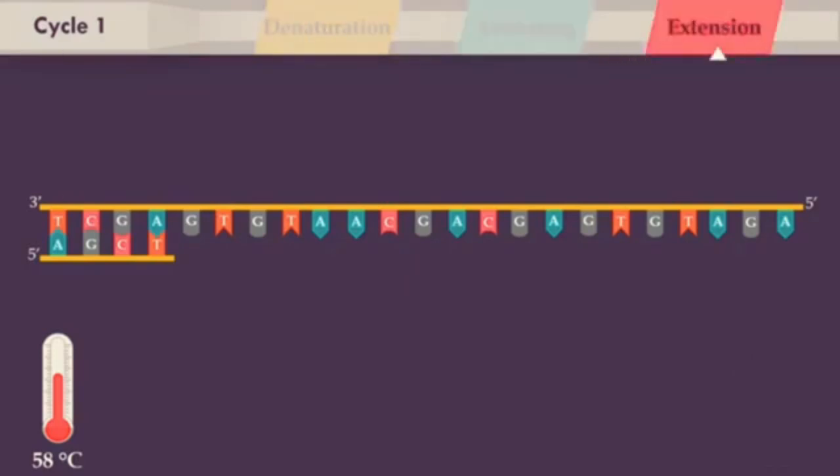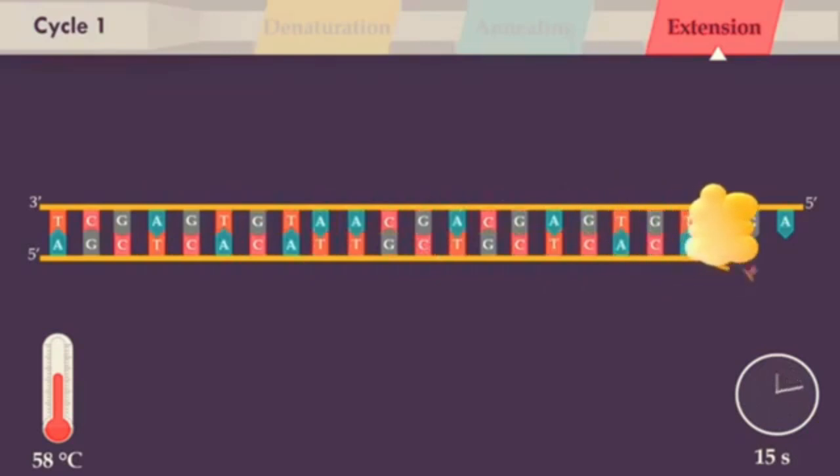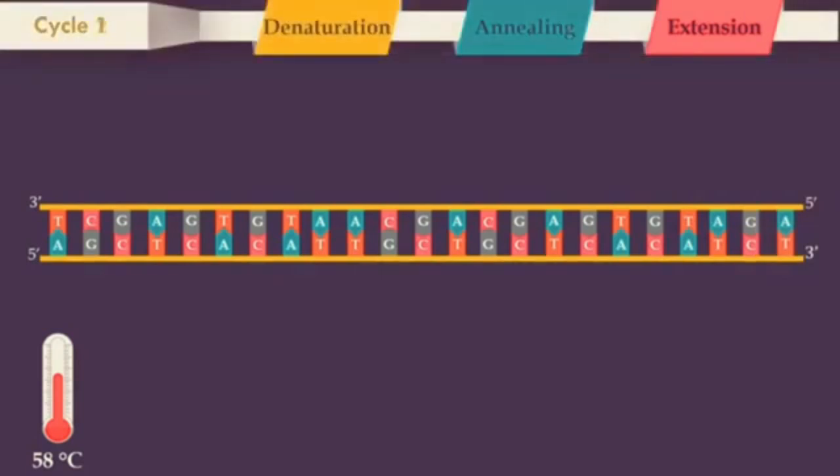In the extension step, the DNA polymerase synthesizes a new DNA strand complementary to the DNA template strand, by adding free nucleotides from the reaction mixture that are complementary to the template in the 5' to 3' direction. The temperature at this step depends on the DNA polymerase used. After the first cycle, the double-stranded DNA target is obtained.